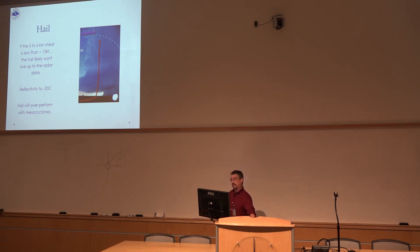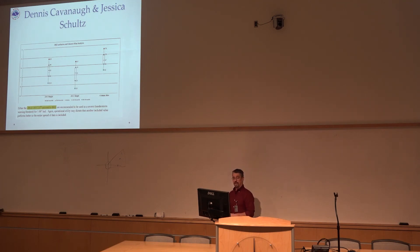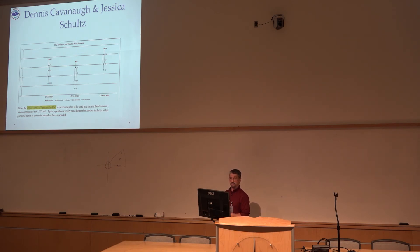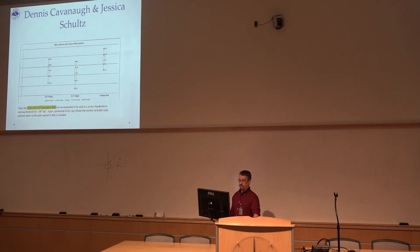If you're trying to guess hail sizes, I like the Cavanaugh and Schultz study — I thought it was a pretty good one, especially since it validated the numbers I liked. I like 60 dBZ to the minus-20°C level as the beginning of a severe thunderstorm warning threshold, plus or minus other factors. If the shear is less than 15 knots, better not. If there's a mesocyclone in it, go quicker than that. There are lots of cases in the southern plains that they sorted through.